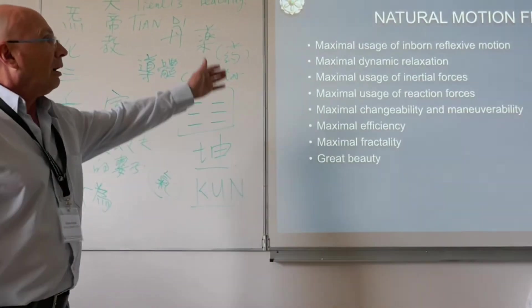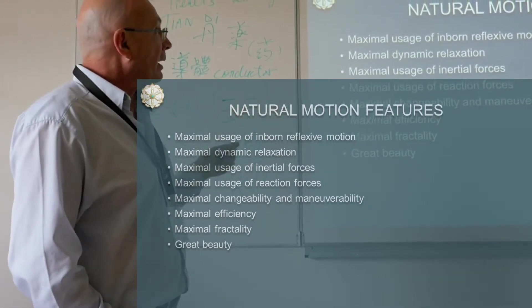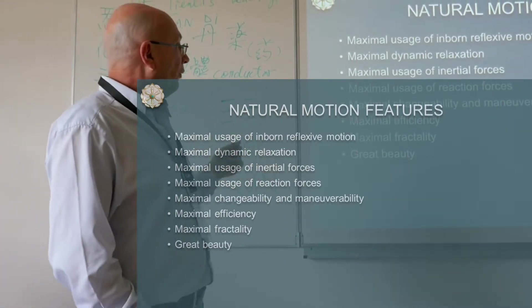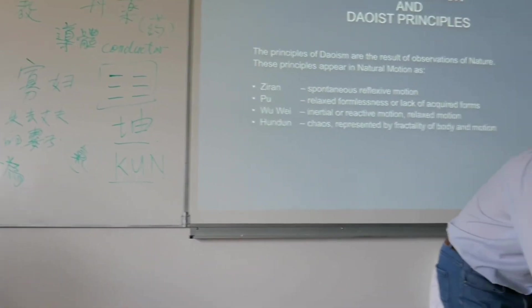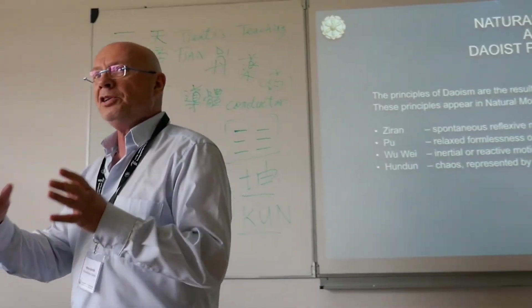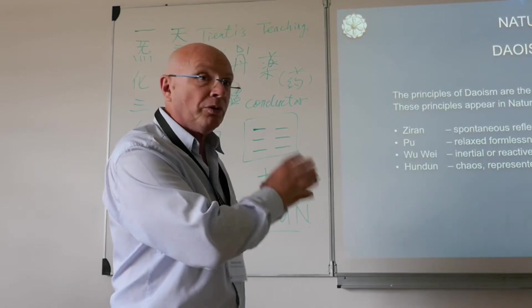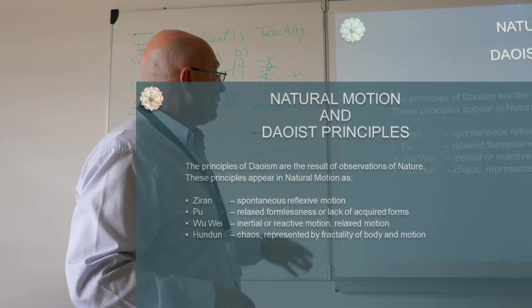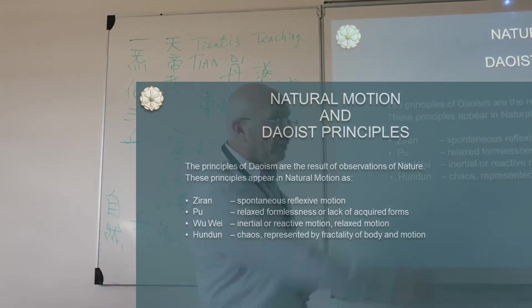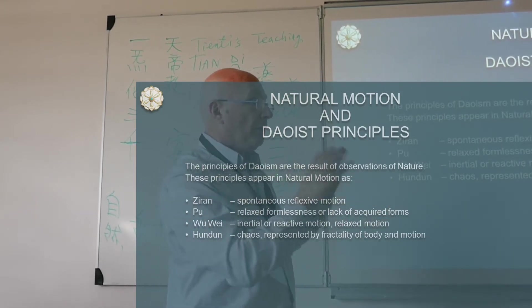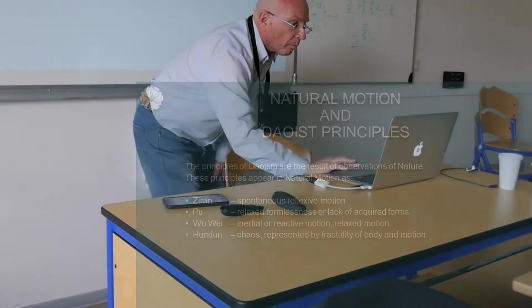Natural motion features: maximum usage of inborn reflexes, maximum dynamic relaxation, inertial and reaction forces, efficiency and fractality, and of course great beauty, because great beauty is very important. If we use ancient Chinese Taoist language, you will see that actually they spoke about the same. It is spontaneous reflexive motion, relaxed forces or lack of acquired motion, inertial or reactive motion, relaxed motion like a towel or piece of fabric, and the chaos or fractality of the motion of the human body.